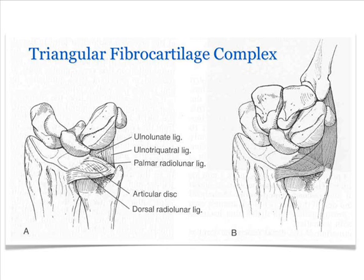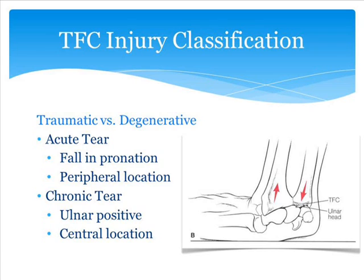More significant injuries to the TFCC would involve the ligamentous structure, causing instability of the distal radial ulnar joint. These injuries have been classified as traumatic and degenerative. Typically in the athlete we're talking about the acute tear — a fall in a pronated forearm position onto the wrist — and those are typically peripheral tears. For older athletes or laborers, we may see chronic tears, or acute injuries on top of chronic ones. Those patients typically have an ulnar-positive variance — their ulna is a little longer than their radius — and we see tears more in the central portion of the TFCC. The central portion is relatively avascular, so repairs there don't typically work because there's not enough vascular supply.